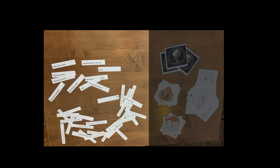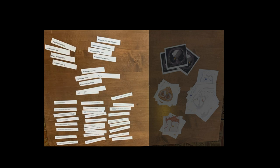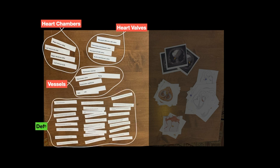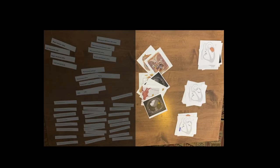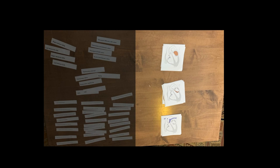I go over here to the words and spread these out a little bit more. The ones at the top are words and the bottom are definitions. I see that there's heart chambers, heart valves, and heart vessels. And over with the pictures I can see there are heart chamber pictures, heart valve pictures, and vessel pictures. I put them all into that pile, so now I have three piles.